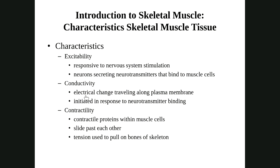That leads us to our third characteristic, contractility — simply the ability to shorten. When it shortens, it produces movement. Contract always means to shorten. Muscles don't lengthen to produce tension; they shorten to produce tension, and contractility is the term for that.